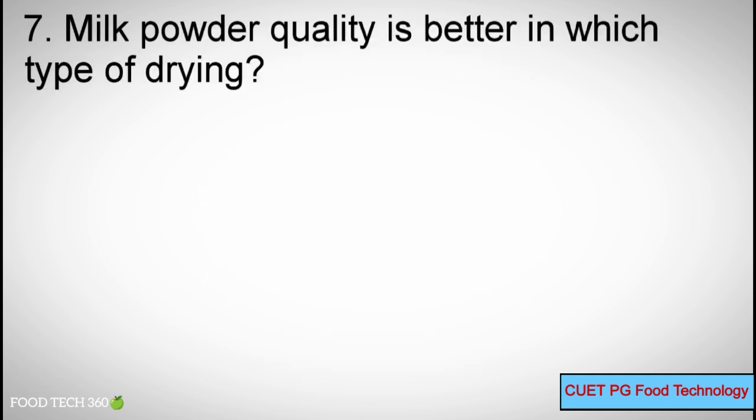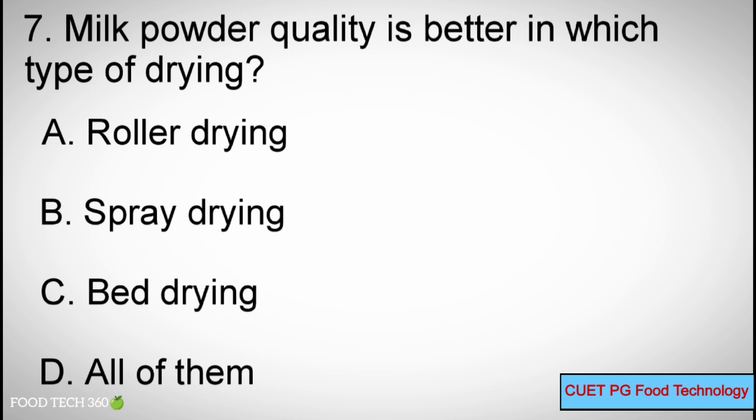Q7: Milk powder quality is better in which type of drying? A. Roller drying, B. Spray drying, C. Bed drying, D. All of them.